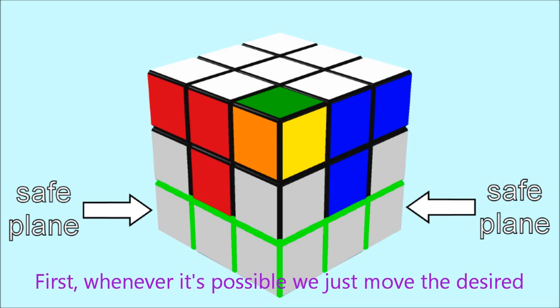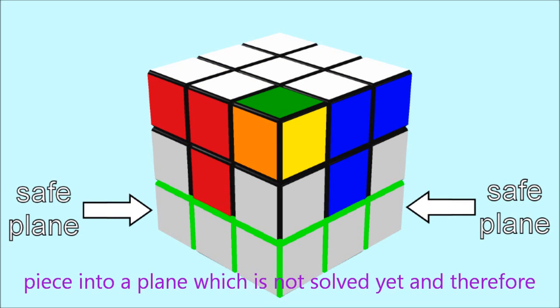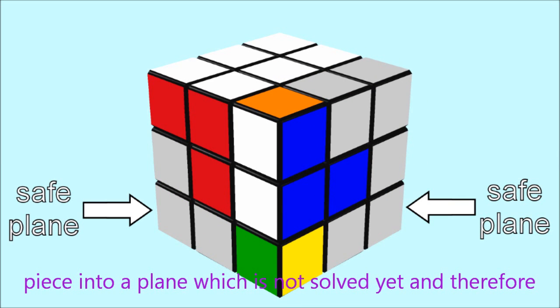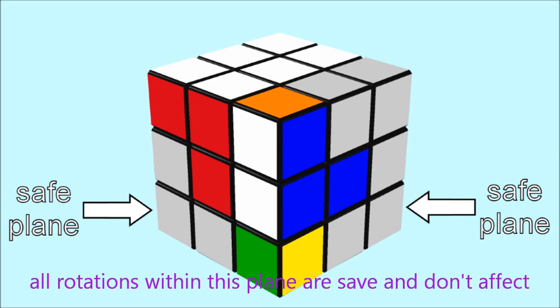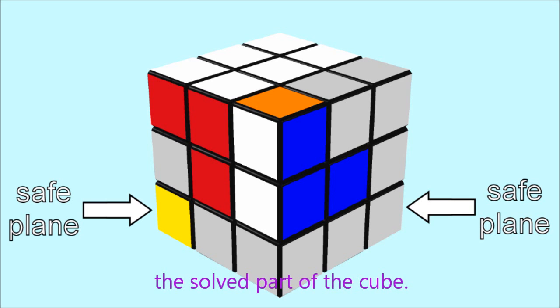There are two principles to retain the existing solved pieces. First, whenever it's possible, we just move the desired piece into a plane which is not solved yet, and therefore all rotations within this plane are safe and don't affect the solved part of the cube.